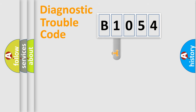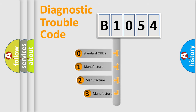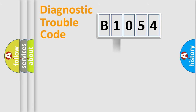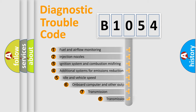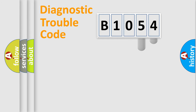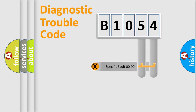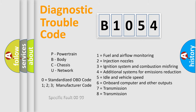This distribution is defined in the first character of the code. If the second character is expressed as zero, it is a standardized error. In the case of numbers 1, 2, or 3, it is a more specific manufacturer car-specific error. The third character specifies a subset of errors. This division is valid only for the standardized DTC code, where only the last two characters define the specific fault of the group.